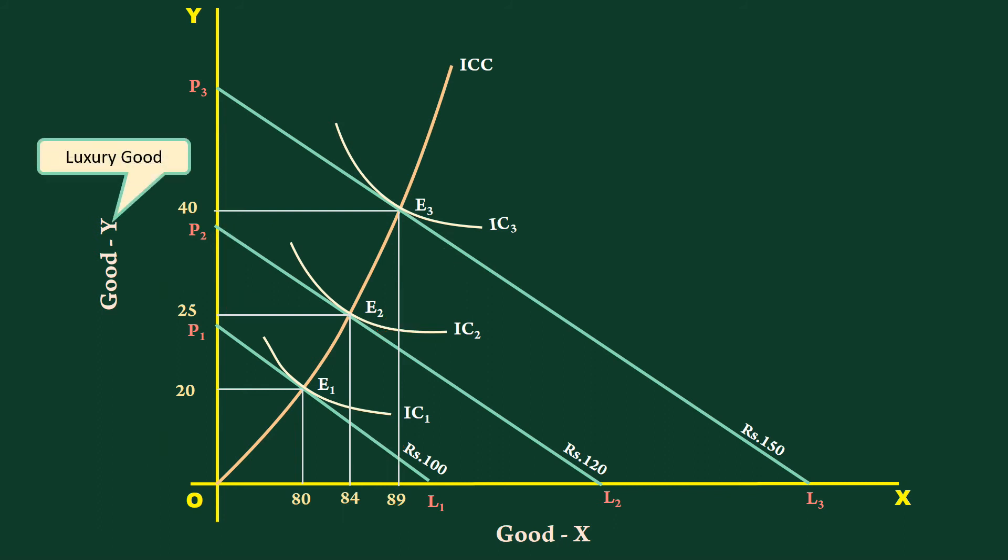When luxury good is represented along the Y axis and necessary good along the X axis, the income consumption curve will slope upward steeply and opens upward. This is the implication of an income consumption curve which is concave upwards.